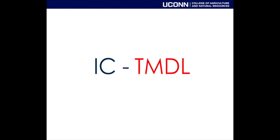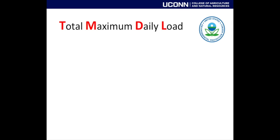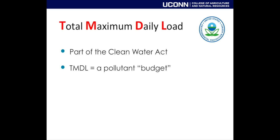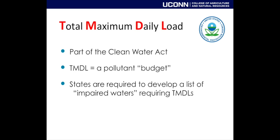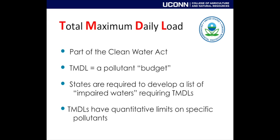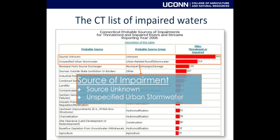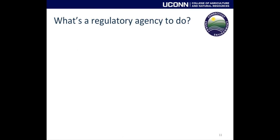Looking at the right side: TMDL stands for Total Maximum Daily Load. It's part of the Clean Water Act — basically a pollutant budget for a given body of water. States are required to develop a list of impaired waters that need TMDLs, with quantitative limits for specific pollutants like sediment or nitrogen. But if you look at Connecticut's list of impaired waters, the two biggest categories are waters where the source is either unknown or unspecified urban stormwater.